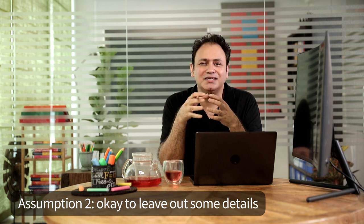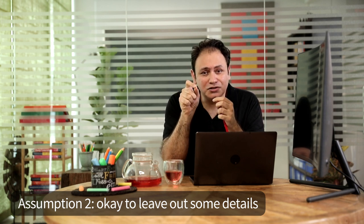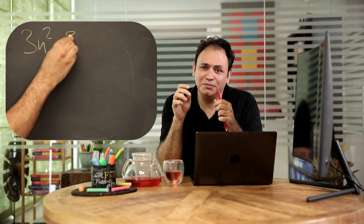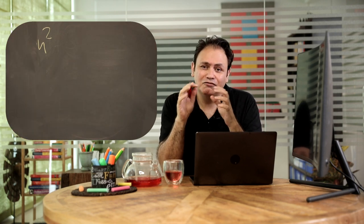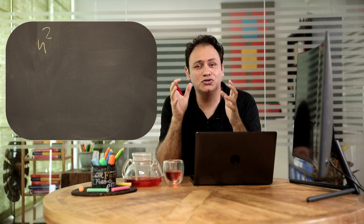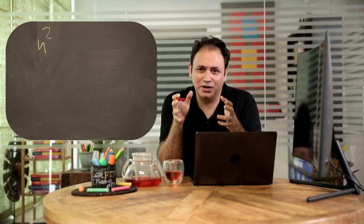Assumption number two says that we are happy to leave out some details — specifically, we are okay to leave out the low-order terms, and also the constants sitting in front of the leading coefficients. For example, with the function 3n² + 3n + 3, we were happy to leave out the 3n + 3, and also the constant 3 in front of n², and hence make the statement that this is essentially O(n²). This assumption helps with tractability and also has relevance for predictability — it still has predictive power.